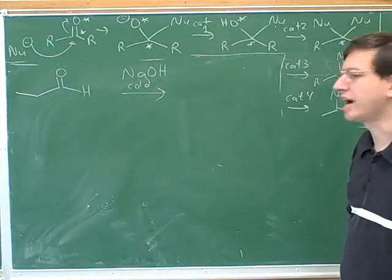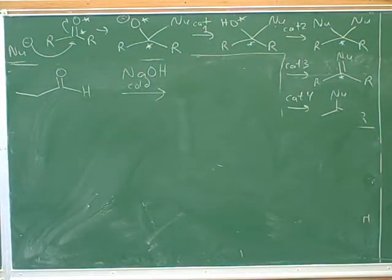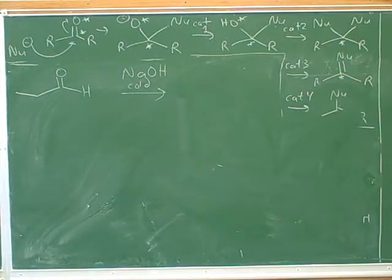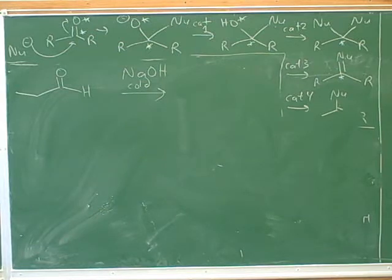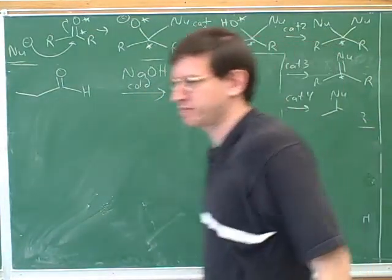Let's see if we can draw the product here without doing the mechanism. Putting in the asterisks and the alpha might help. It's important to be able to draw the product without going through the whole mechanism because you might be doing problems where you have two or three aldol condensations in the same problem, and you wouldn't have to do the mechanism every single time. Putting in the alpha and asterisk labels and trying to follow category one or category three patterns might help.